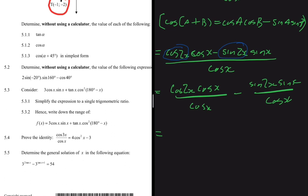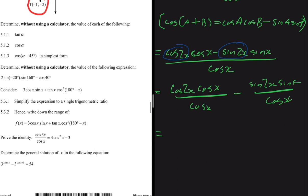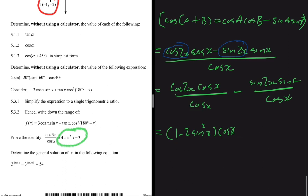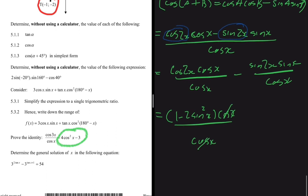Now let's apply the double angle formula for cos(2x). We're trying to reach 4cos²(x) − 3, so we use cos(2x) = 1 − 2sin²(x). The first term becomes (1 − 2sin²(x)) multiplied by cos(x), all divided by cos(x). The cos(x) terms cancel, leaving 1 − 2sin²(x).